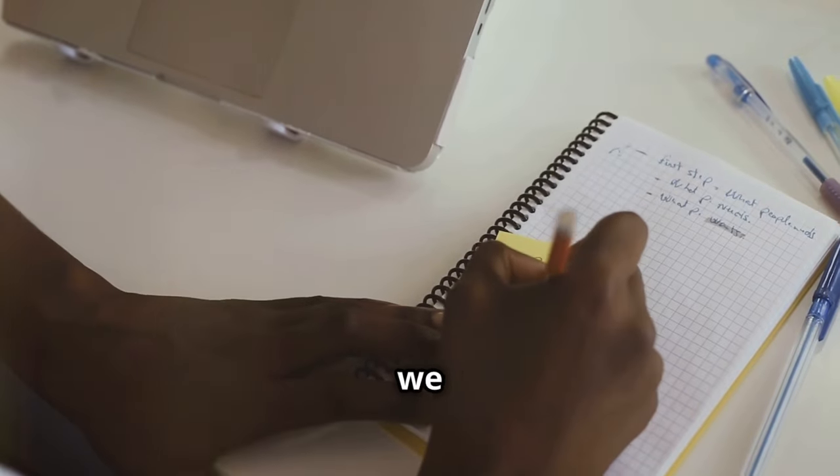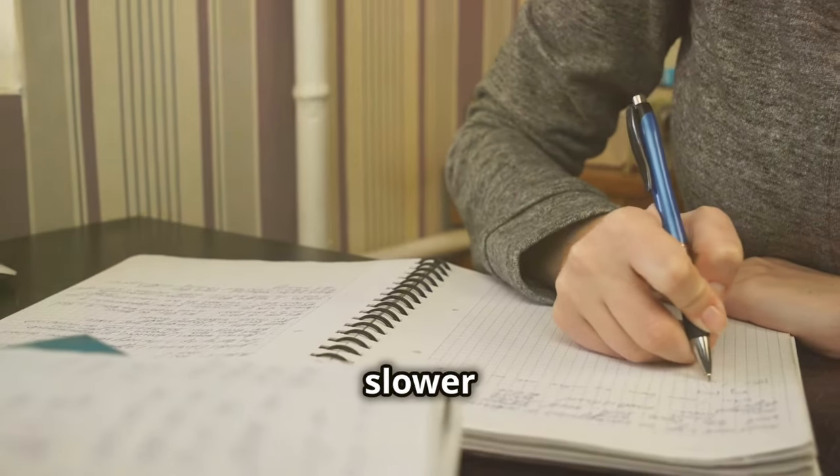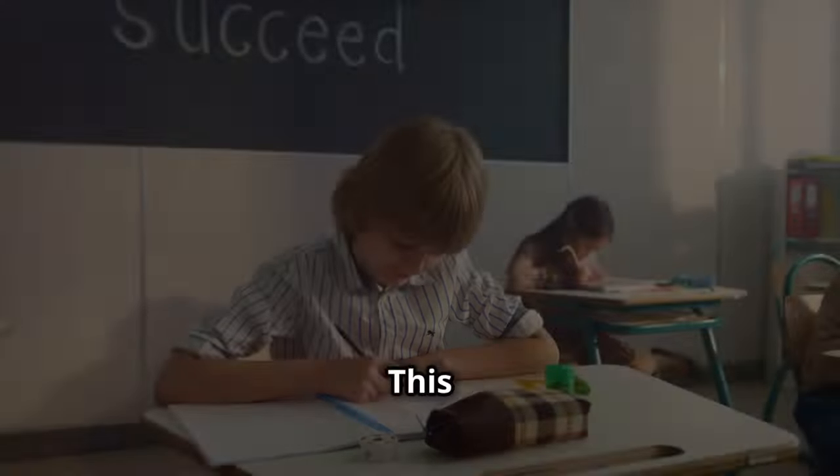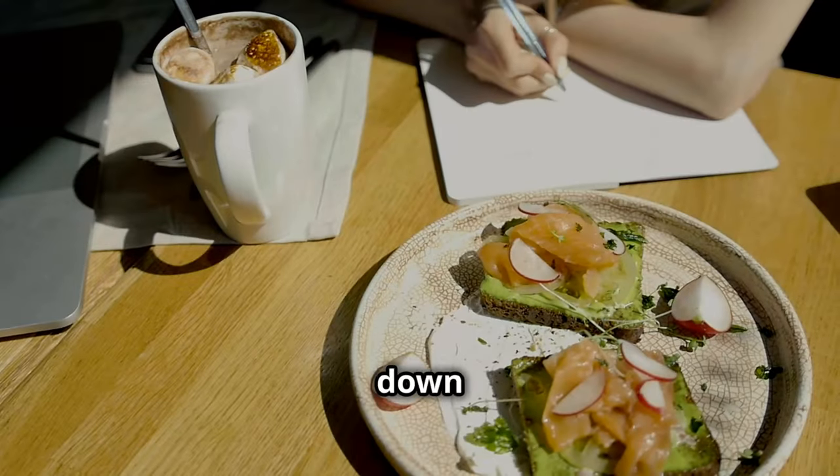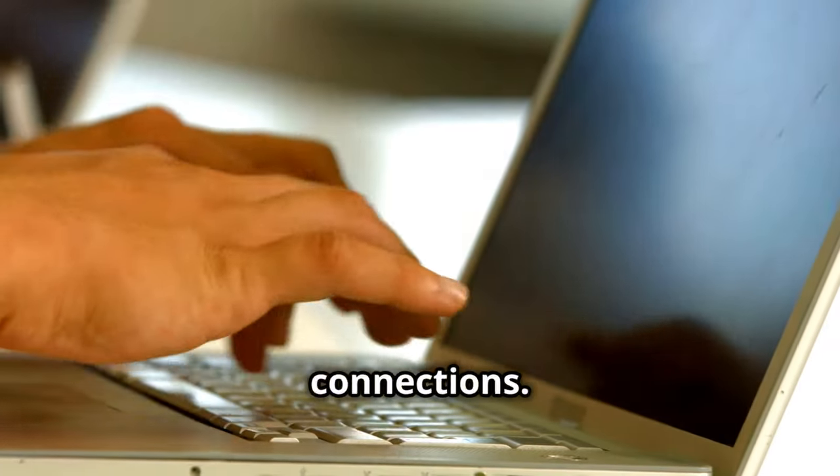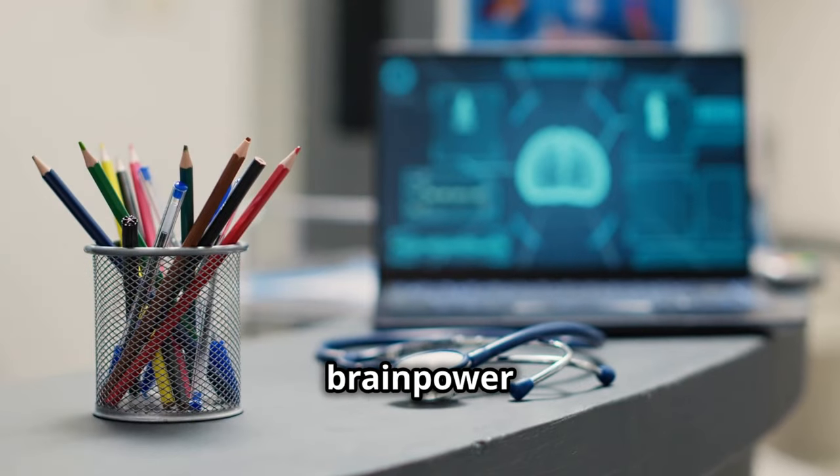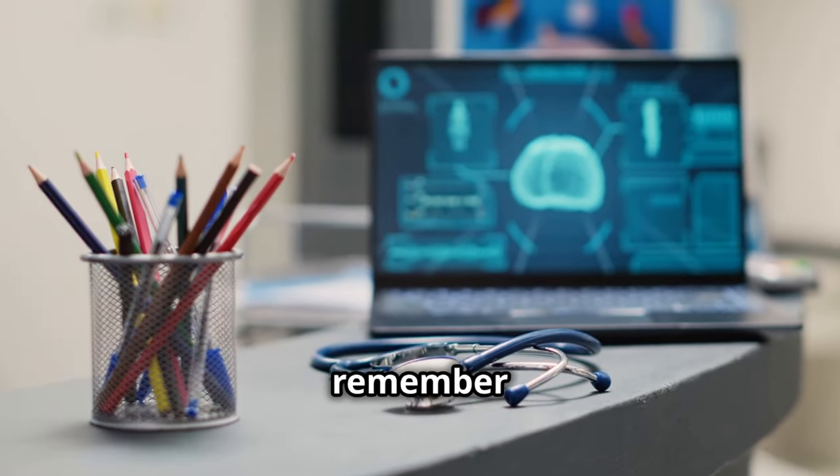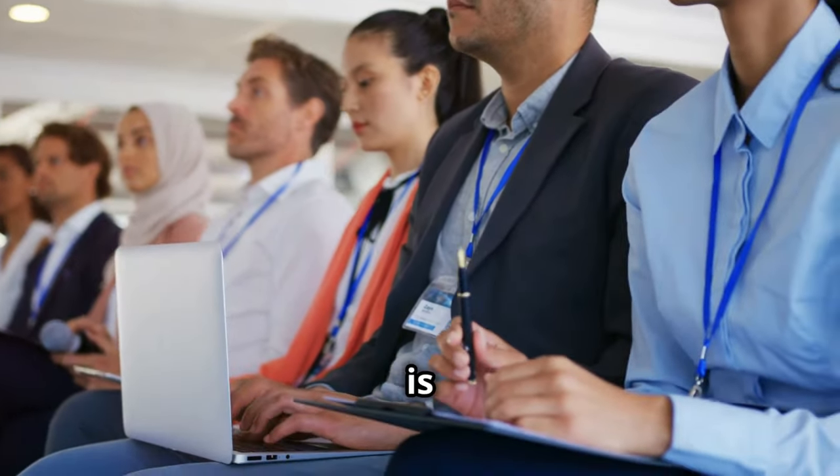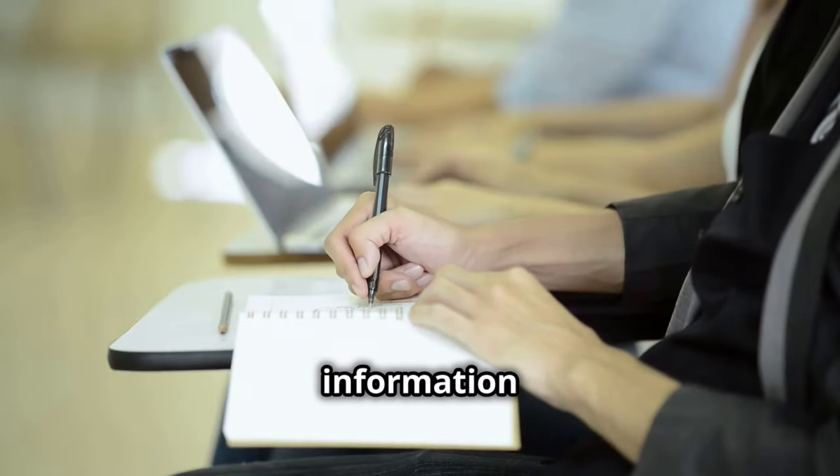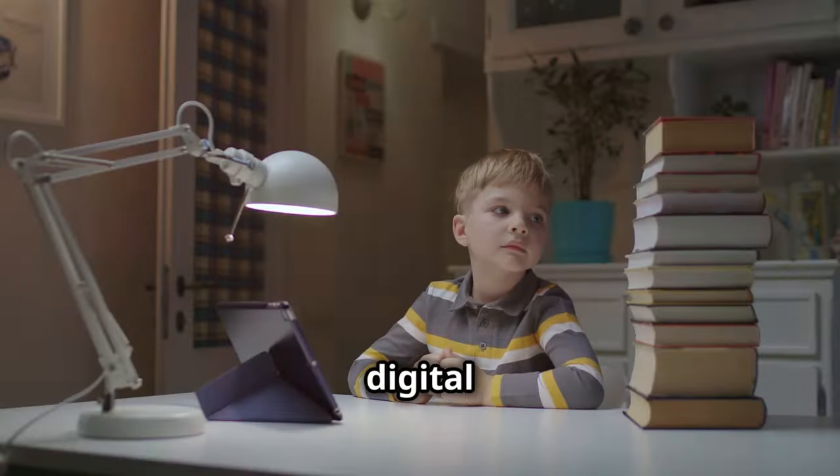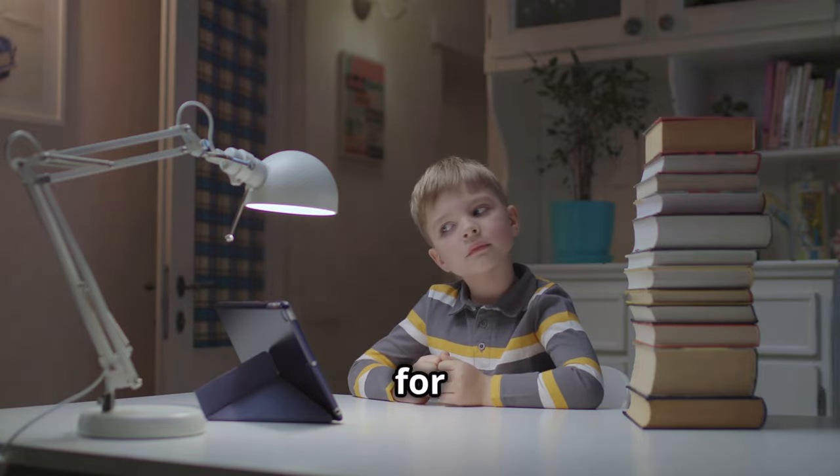Why the difference? Researchers think it's about how we use our hands. Writing by hand is slower and more deliberate than typing. This forces us to really think about what we're writing. We can't just jot down every word. We have to summarize and make connections. This extra brain power seems to help us learn and remember better. Typing, on the other hand, is so fast that we can go on autopilot. We might not process the information as deeply. So while digital is convenient, it might not be the best for our memories.